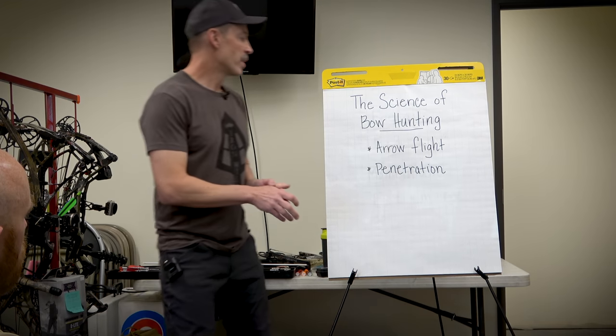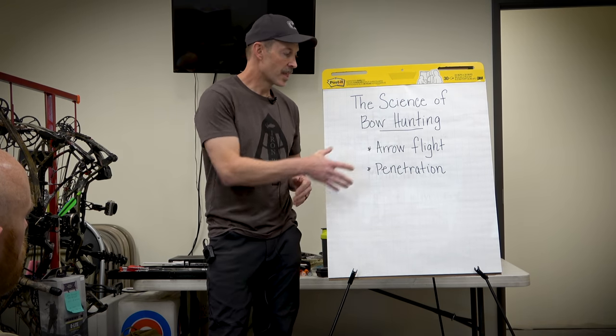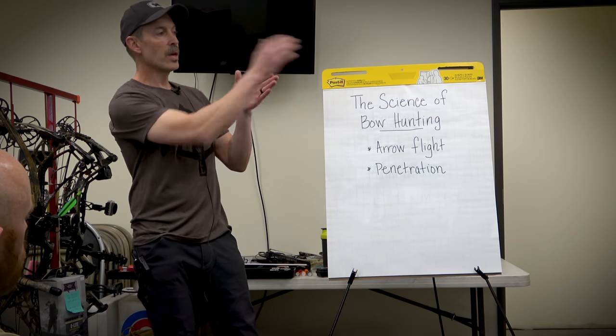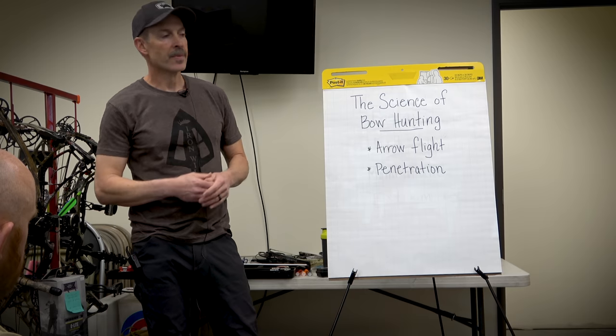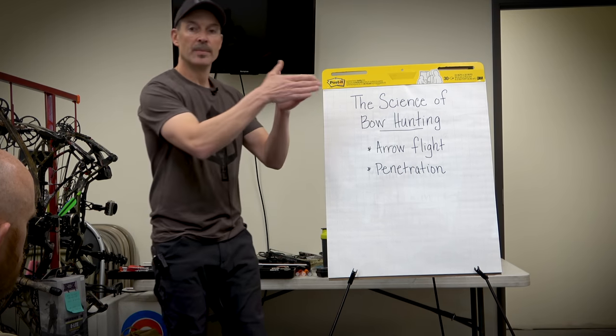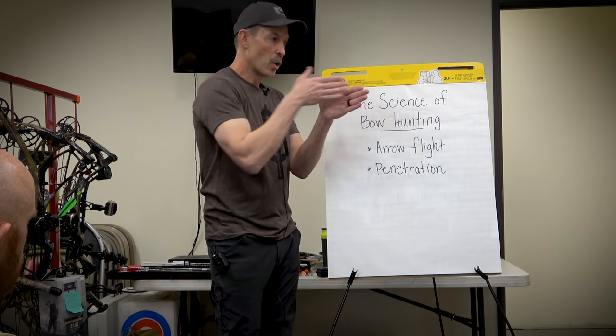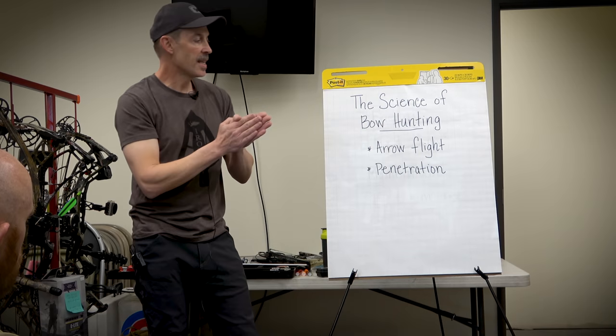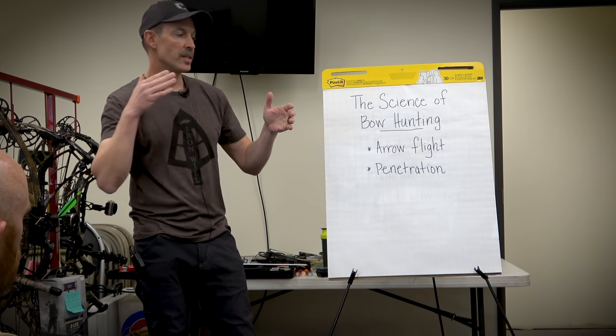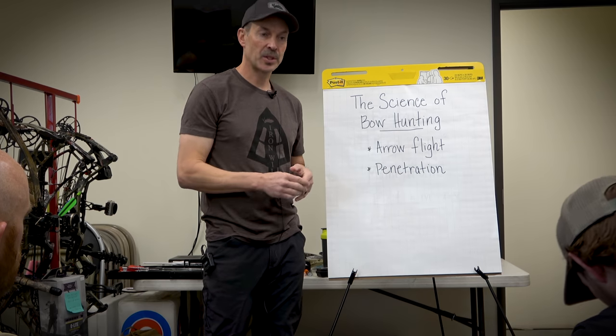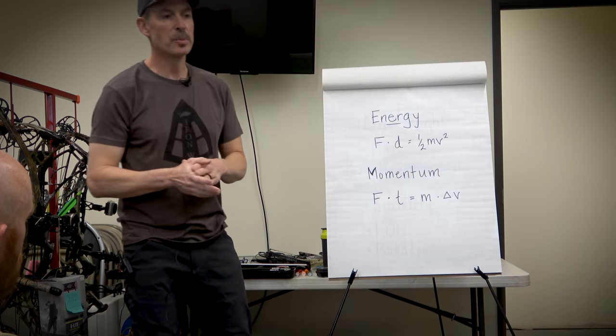So what we want to do here is it's all about arrow flight and penetration. We want to be able to hit what we're aiming at downrange, have the arrow going as straight as we can, have all that momentum in line going through the right place on the elk. And then at that impact, we want it to cut through as far as possible, hopefully get a pass through on that animal. Here's some of the science behind it.